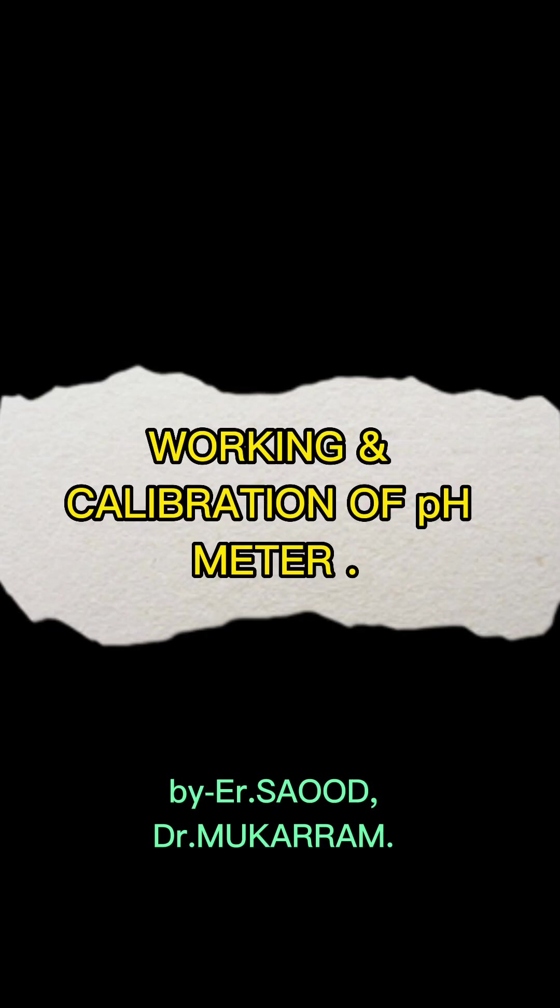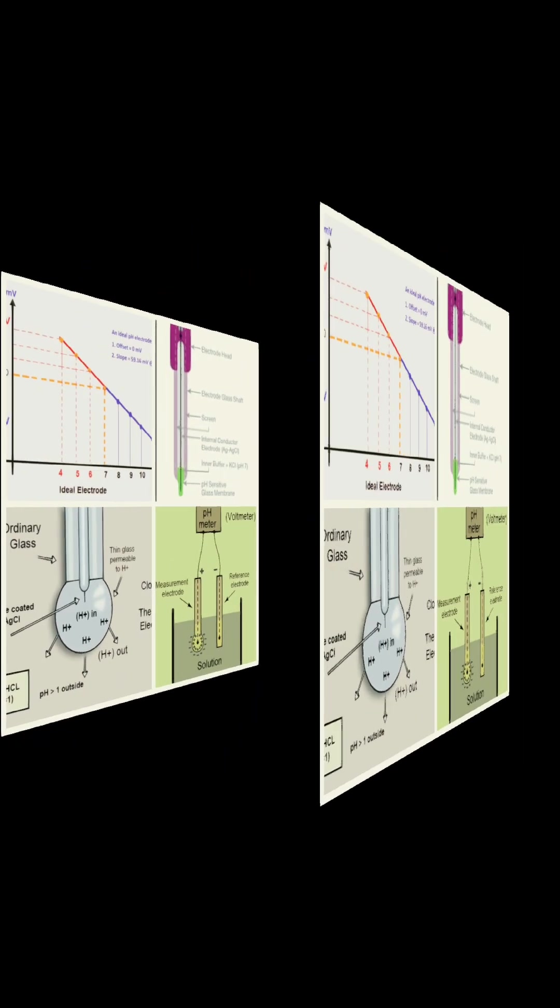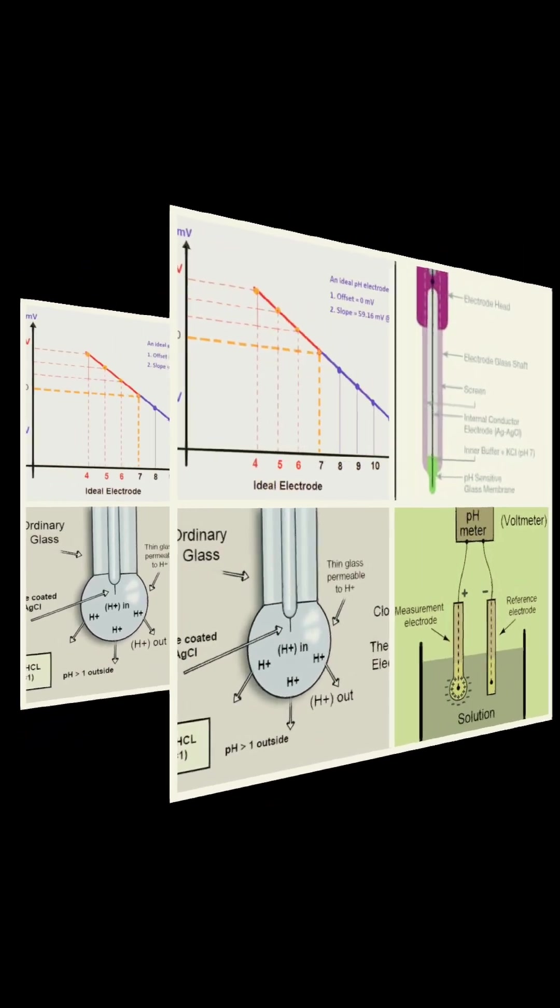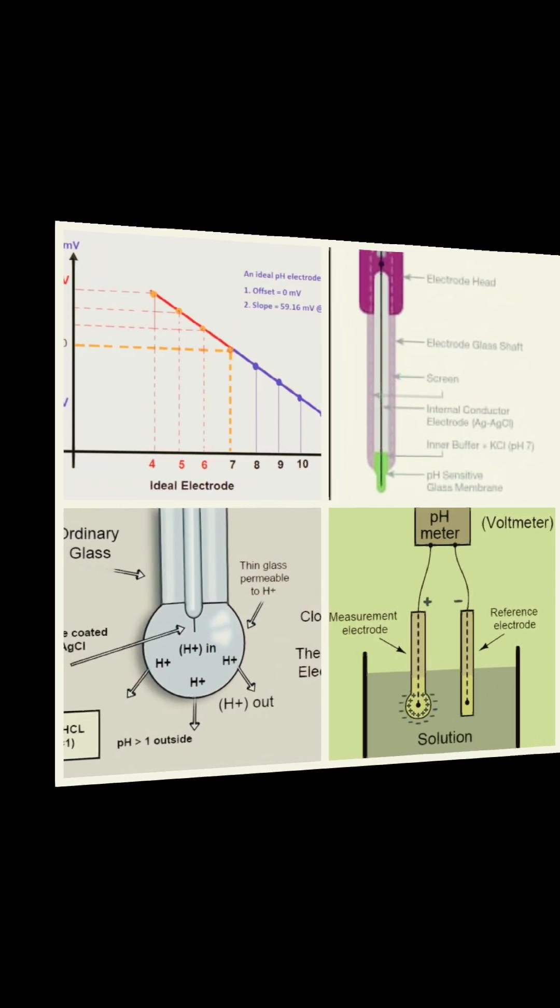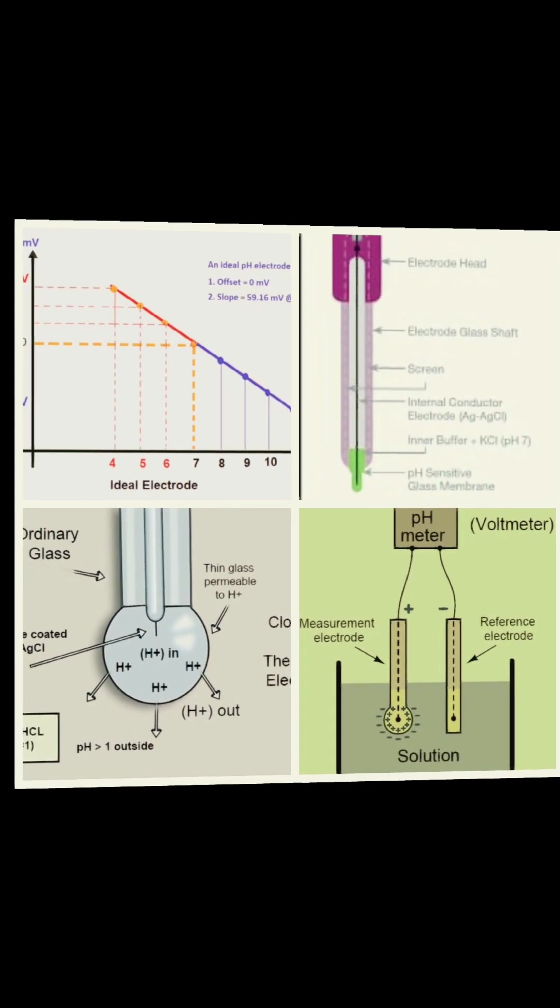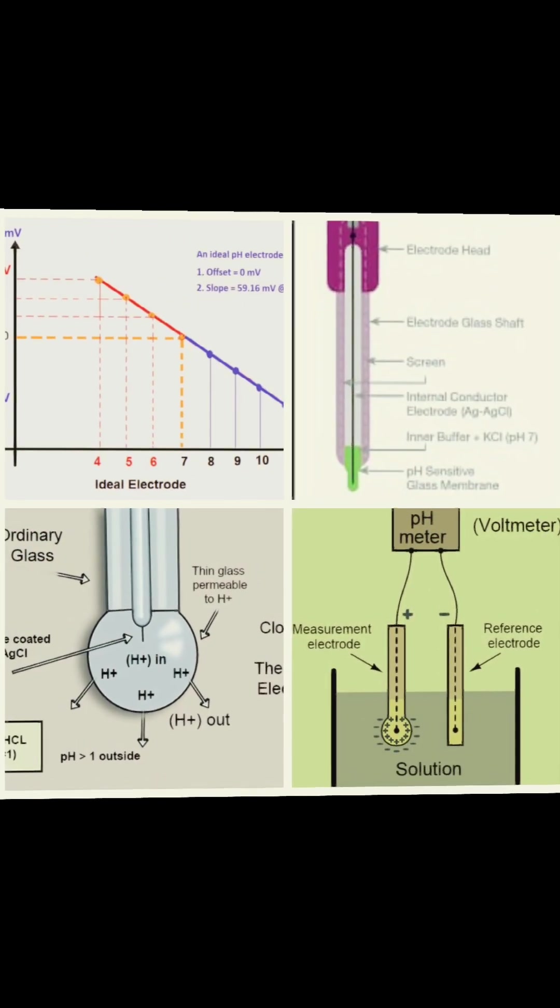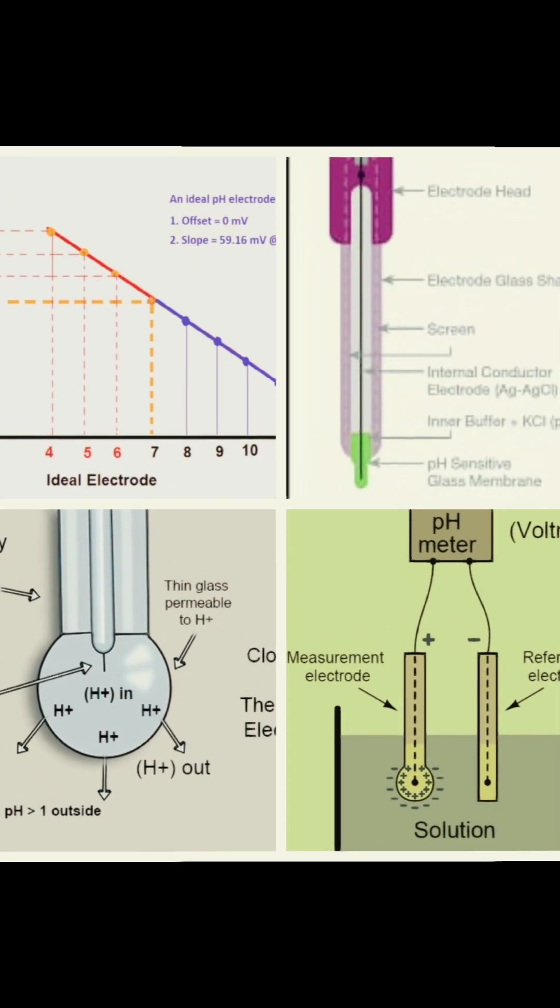Working and calibration of pH meter. Hello guys, today we are going to learn about the working of a pH meter. A pH meter is a scientific instrument that measures the hydrogen ion activity in a water-based solution, indicating its acidity or alkalinity expressed as pH. Basically, a pH meter is like a voltmeter.